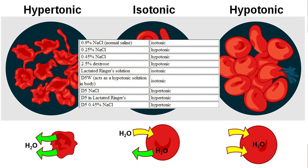Here are some of the IV fluids we use most commonly in medicine. Normal saline, which is 0.9% sodium chloride, is isotonic, while any amount lower in percentage of NaCl is hypotonic to the blood. Any amount higher of NaCl is hypertonic to the blood. Lactated Ringer solution is also isotonic. D5W, which stands for 5% dextrose in water, is more hypotonic, although it is considered isotonic. Anything added to D5W makes it hypertonic to the blood.